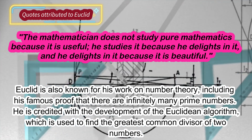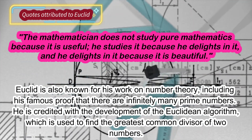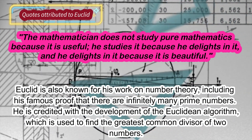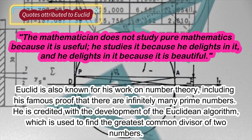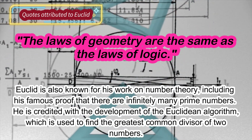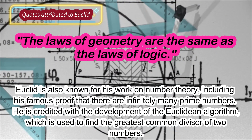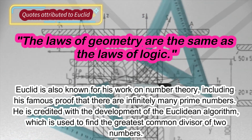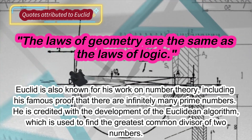Euclid is also known for his work on number theory, including his famous proof that there are infinitely many prime numbers. He is credited with the development of the Euclidean algorithm, which is used to find the greatest common divisor of two numbers.